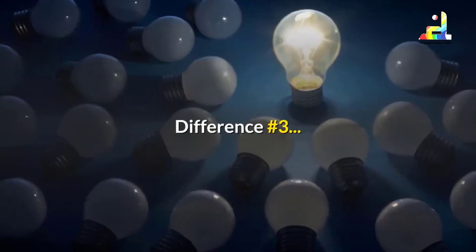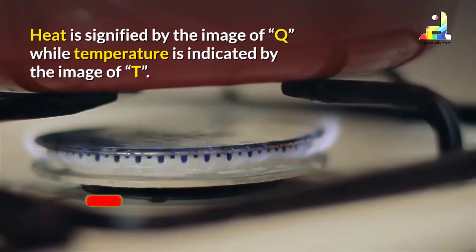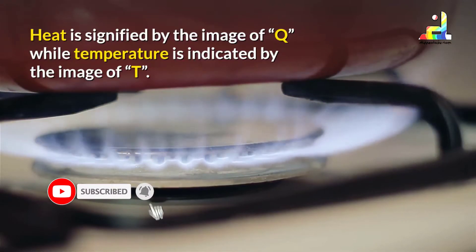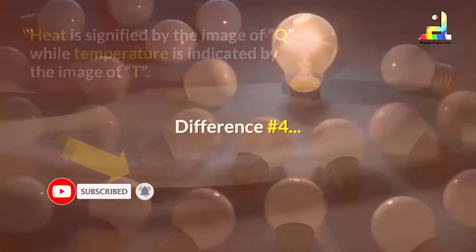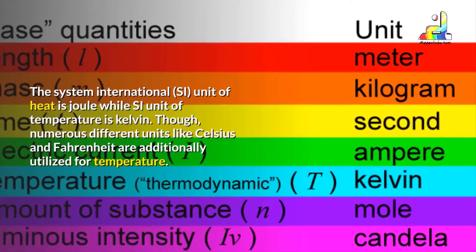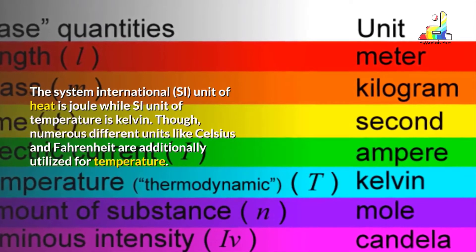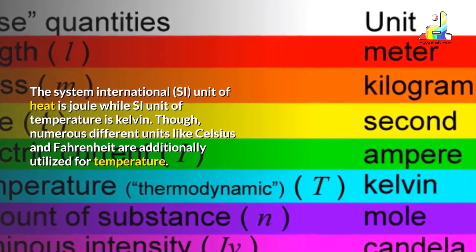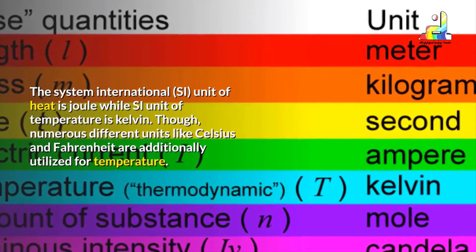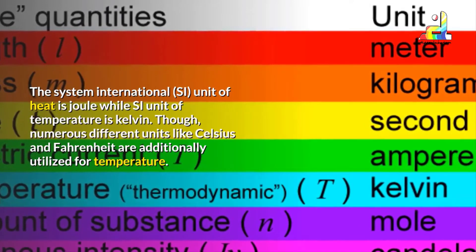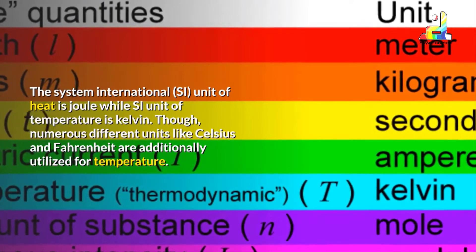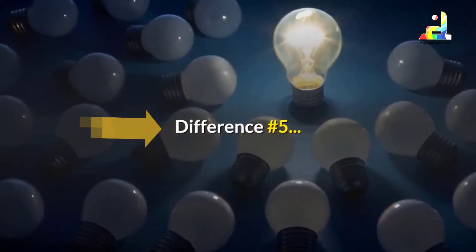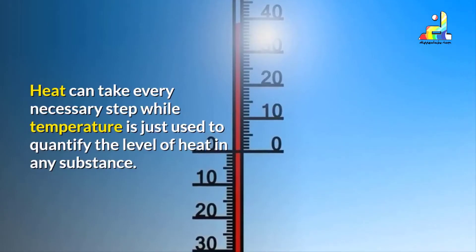Difference number three: heat is denoted by the symbol Q, while temperature is indicated by the symbol T. Difference number four: the SI unit of heat is the joule, while the SI unit of temperature is kelvin, though other units like Celsius and Fahrenheit are also commonly used for temperature.